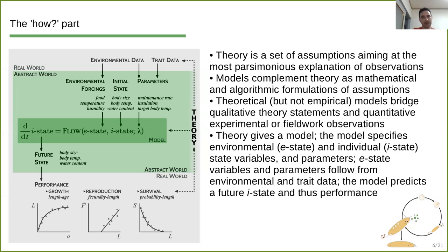So basically theory gives us a model which lives in this kind of greenish abstract world. The model specifies environmental state variables, these e-state variables, and also individual state variables, these i-state variables, and also parameters. And then e-state, so environmental variables and parameters, are something that we get from environmental data and trait data, essentially from the real world. And here we are making connection between these two kind of abstract and real worlds.